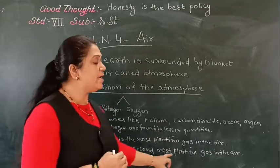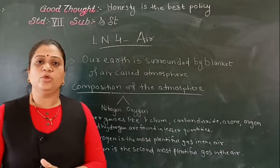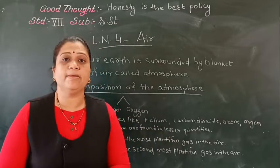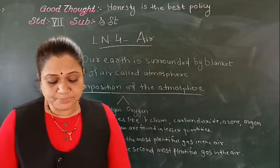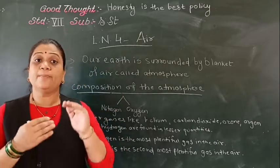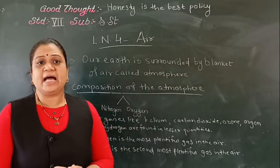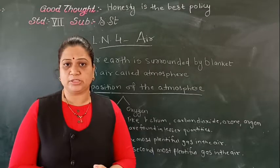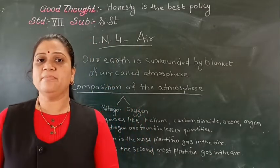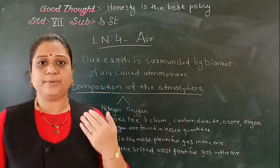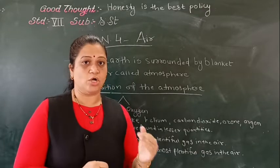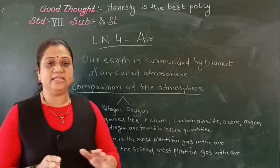Oxygen is the second most plentiful gas in the air. Oxygen is a very important and useful gas for human beings — without oxygen we cannot live. Humans and animals take oxygen from the air as they breathe, and green plants produce oxygen during photosynthesis. You have studied this photosynthesis process in science. In this way, the oxygen content in the air remains constant, but if we cut trees then this balance gets disturbed.